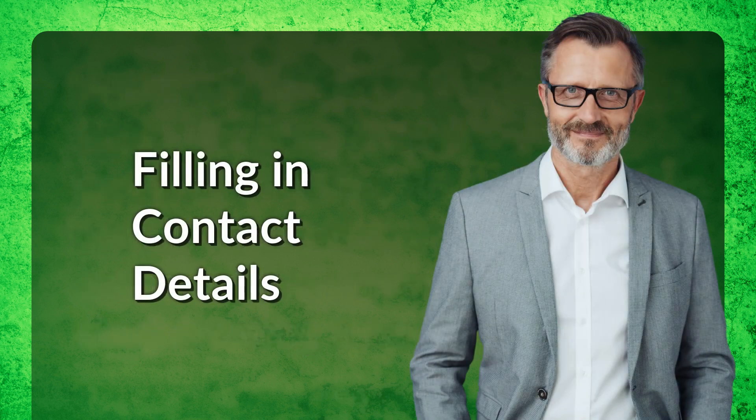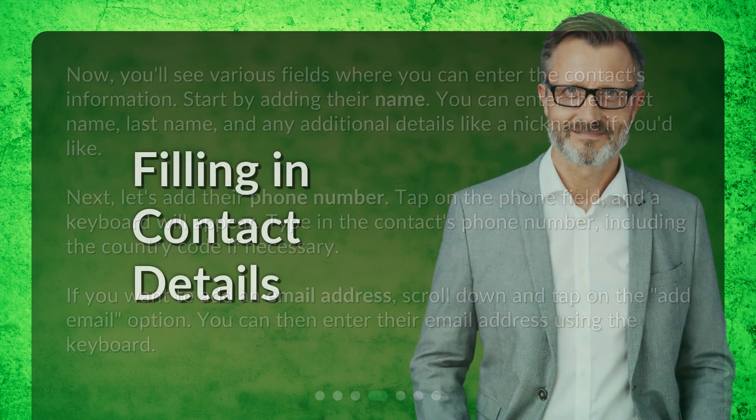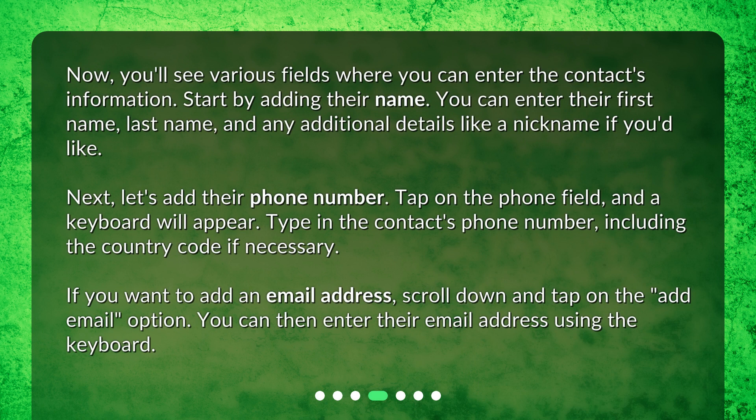Now you'll see various fields where you can enter the contact's information. Start by adding their name — you can enter their first name, last name, and any additional details like a nickname if you'd like. Next, let's add their phone number. Tap on the phone field and a keyboard will appear. Type in the contact's phone number, including the country code if necessary.